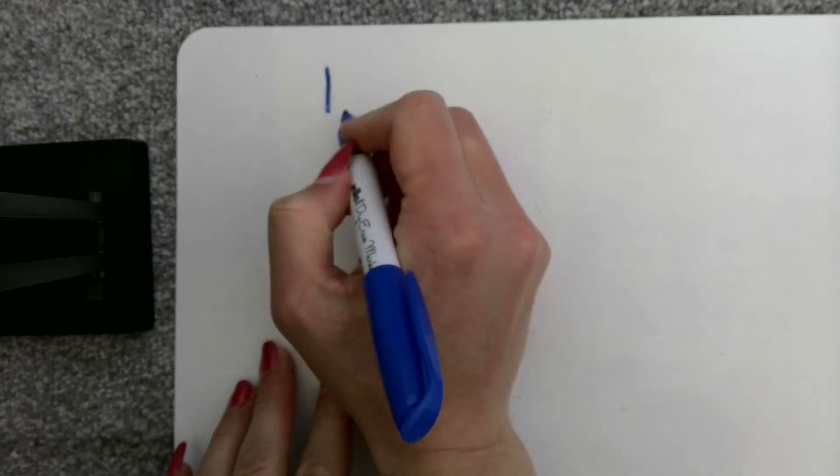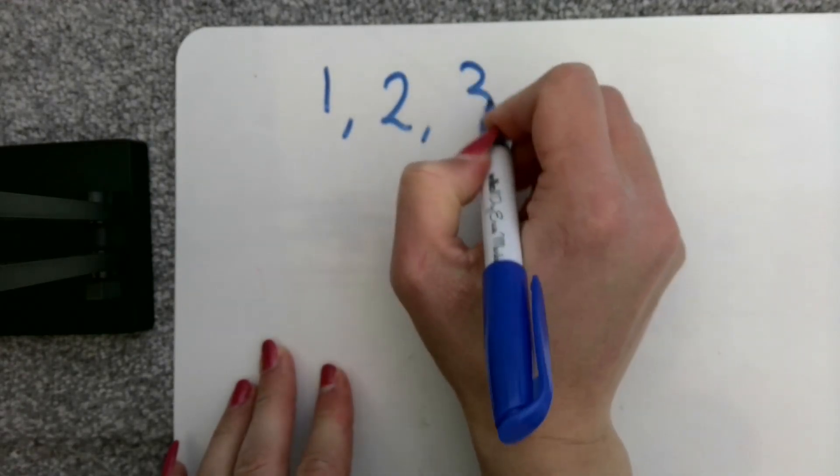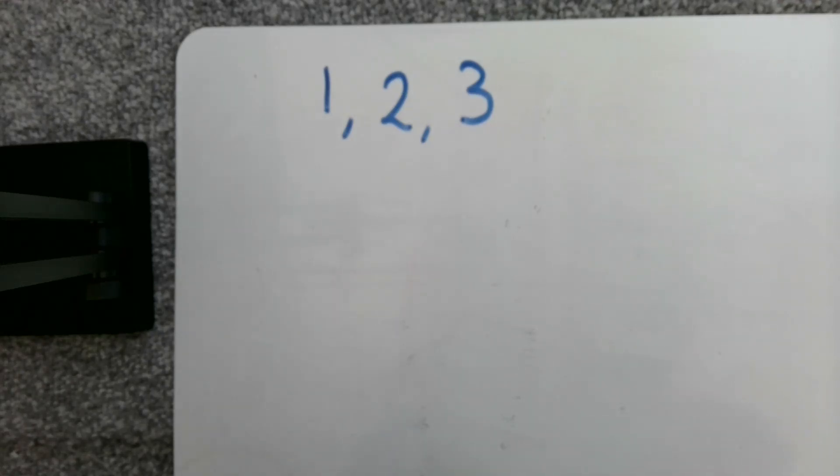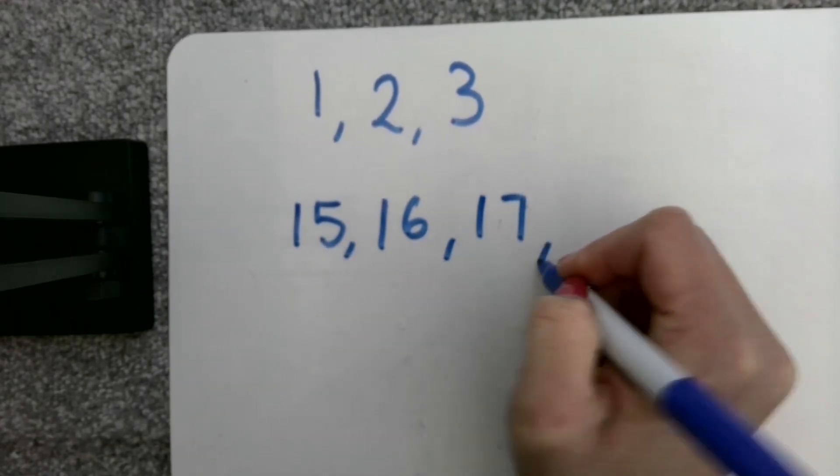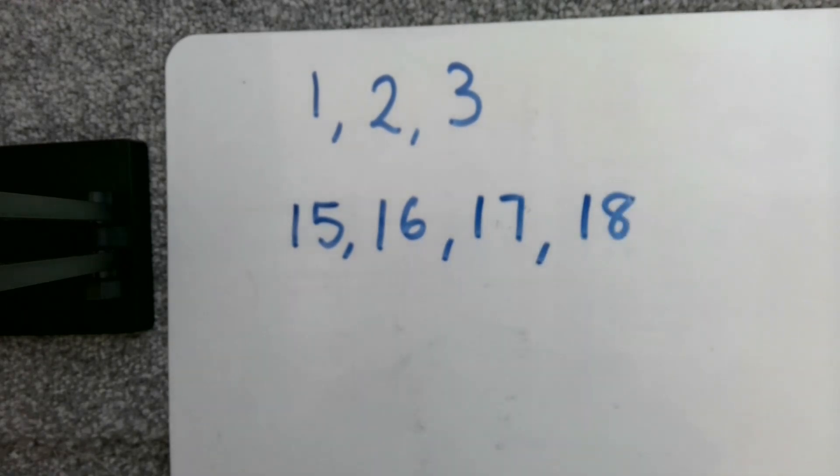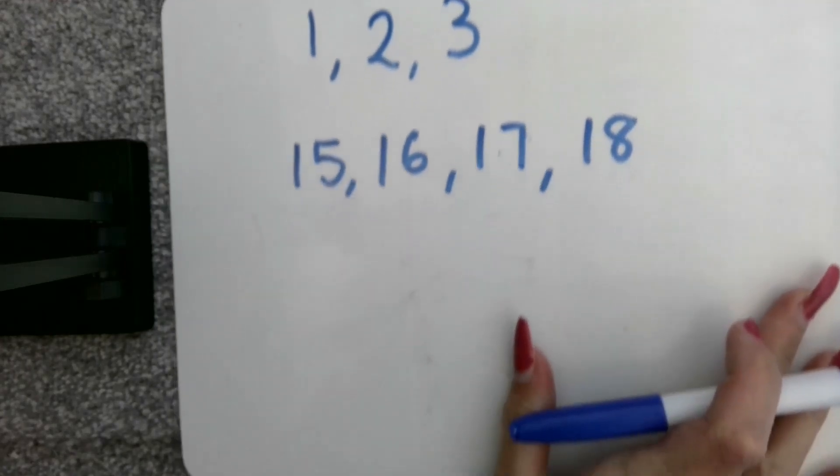The first thing we're going to begin with discussing is what is a consecutive number? Consecutive just means that it follows on from the previous one. Consecutive numbers go up in steps of one. So, one, two, three. They are three consecutive numbers. Fifteen, sixteen, seventeen and eighteen. They are all consecutive numbers because they go up in one each time.